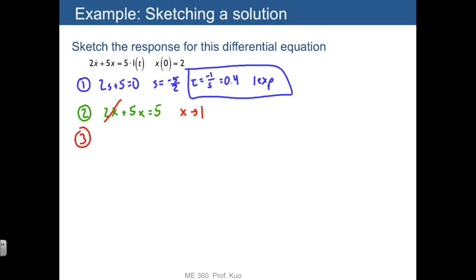The third step was just to note the initial condition, x of 0 is equal to 2. And it has to be pointing at the final value after one time constant.